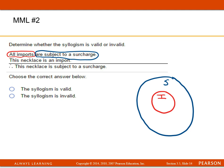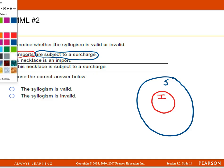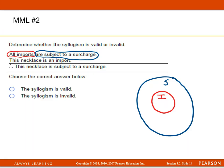All the imports will get a surcharge, and then we've got a necklace. This necklace, which I will use a dot and the letter N to represent, is an import. So the only place that that can go is inside the red circle, because that's where all the imports are.